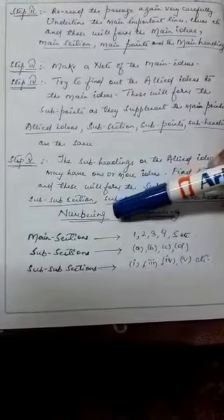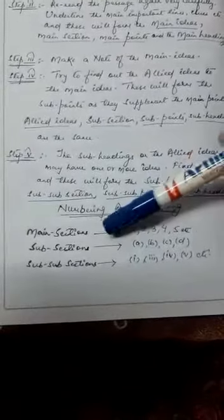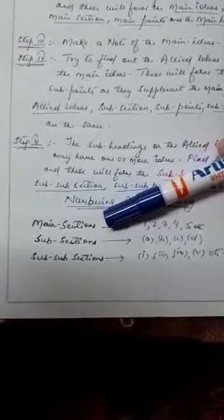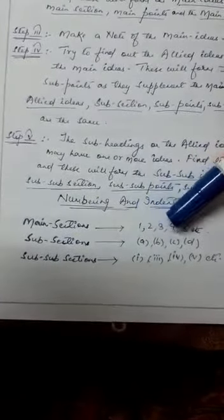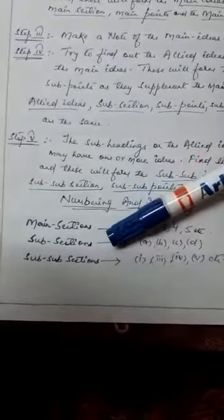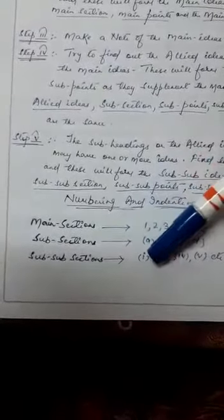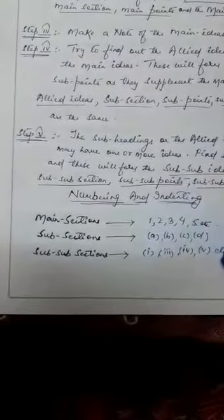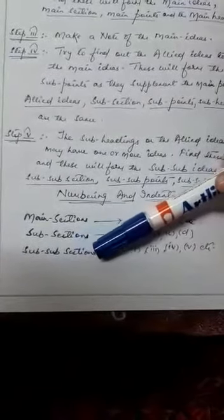Then comes the next heading that is numbering and indenting. Main sections will have point numbers 1, 2, 3, 4, 5, etc. Simultaneously, sub-section will have A, B, C and D which will be under 1, 2, 3. Then A, B, C will also have in Roman numerals 1, 2, 3, 4, 5 points. These are known as sub-sub-sections.